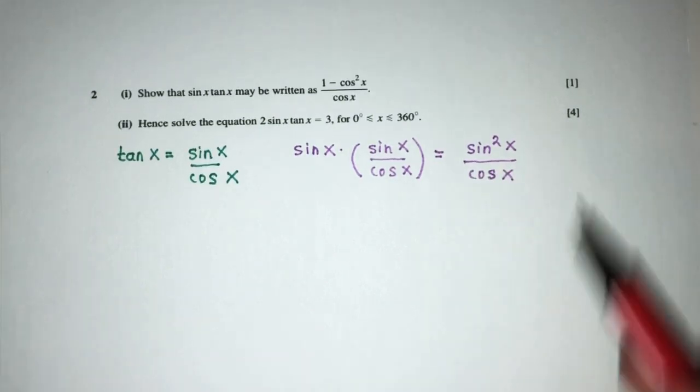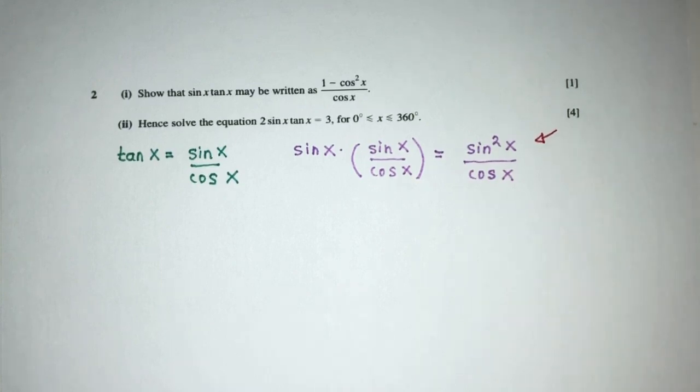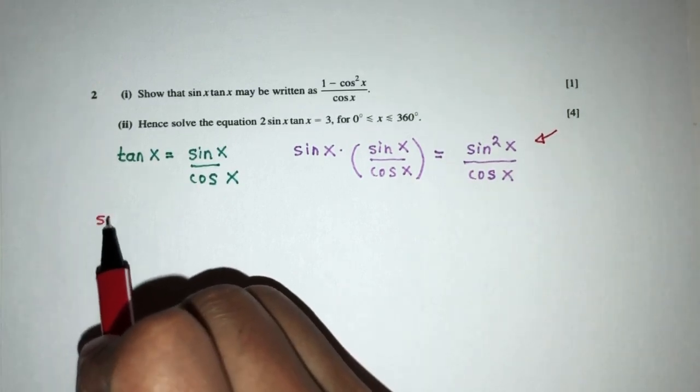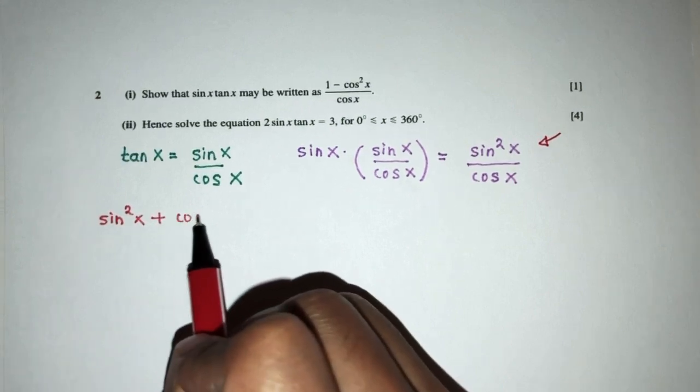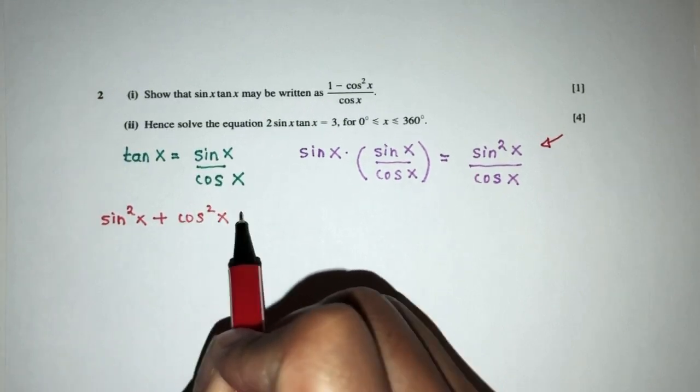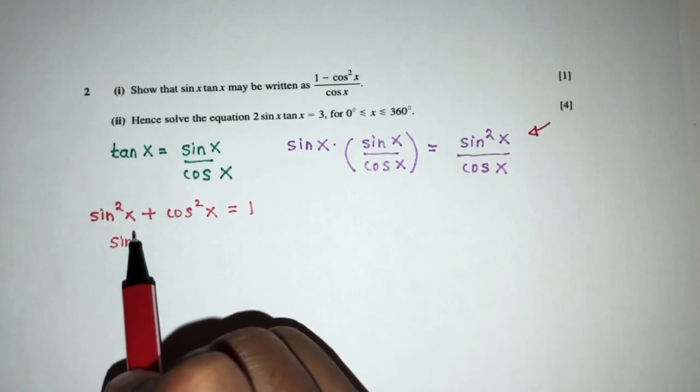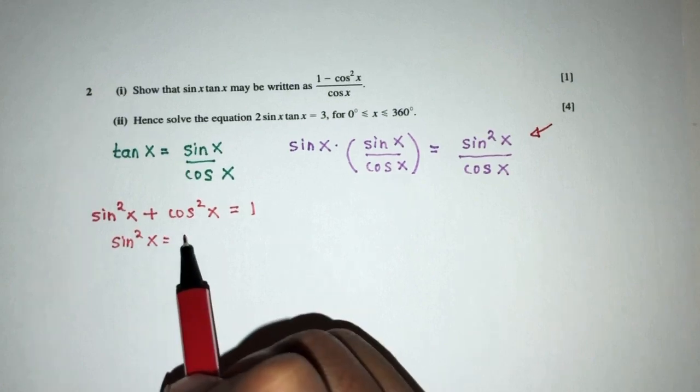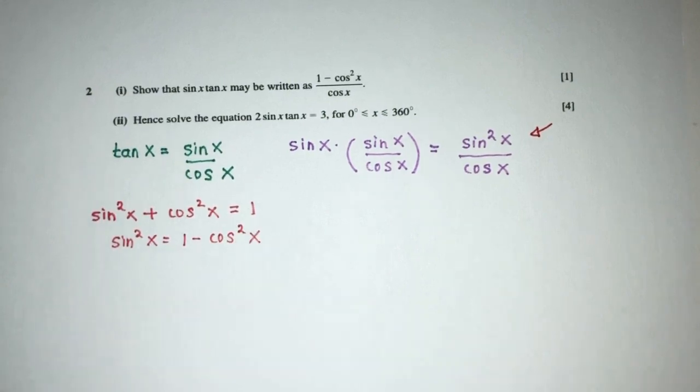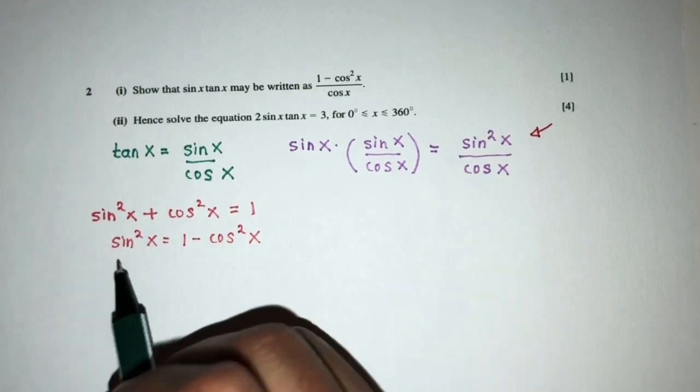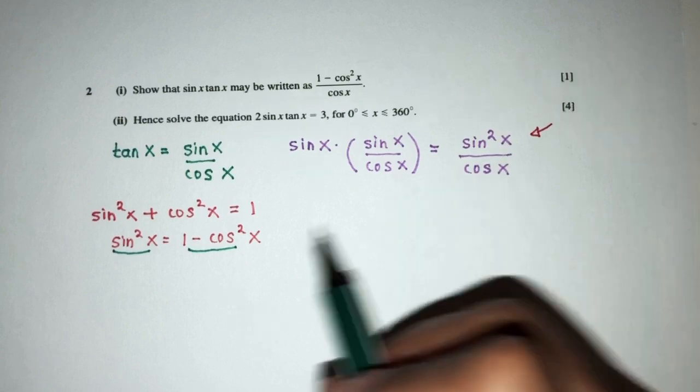Now something we know here is from the formulas that we are given, we know that sin x squared plus cos x squared is equal to 1. So what if you make this become subject? So sine square x is equal to 1 minus cos square x. Ah, so now we can actually replace this by this in the main equation. So let's continue.